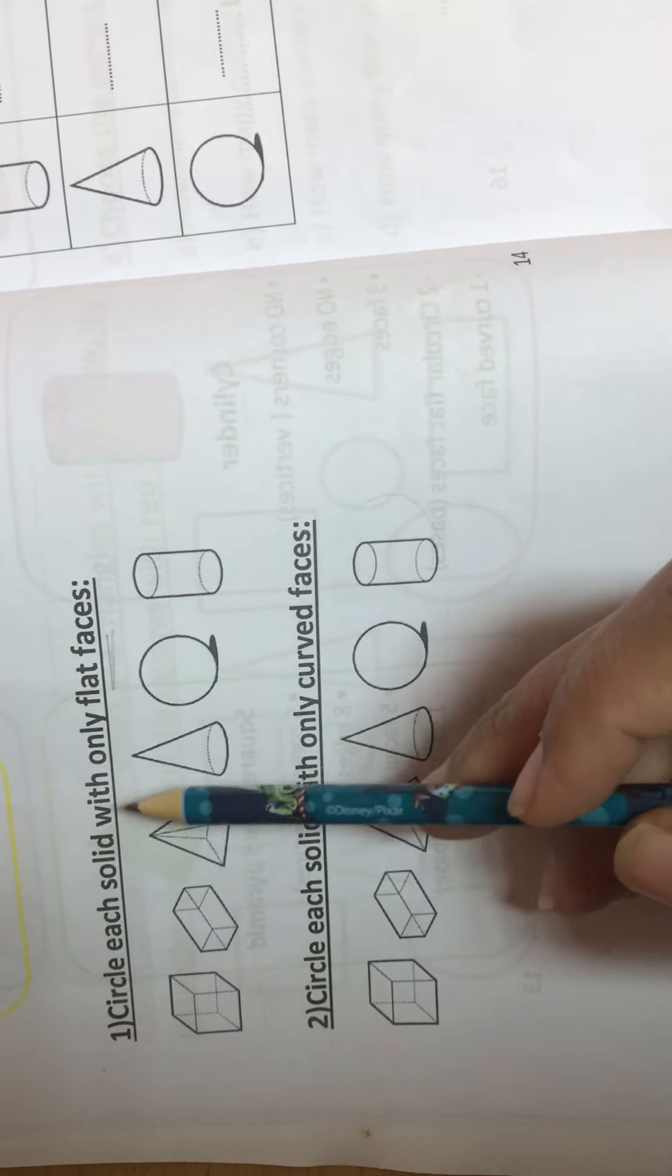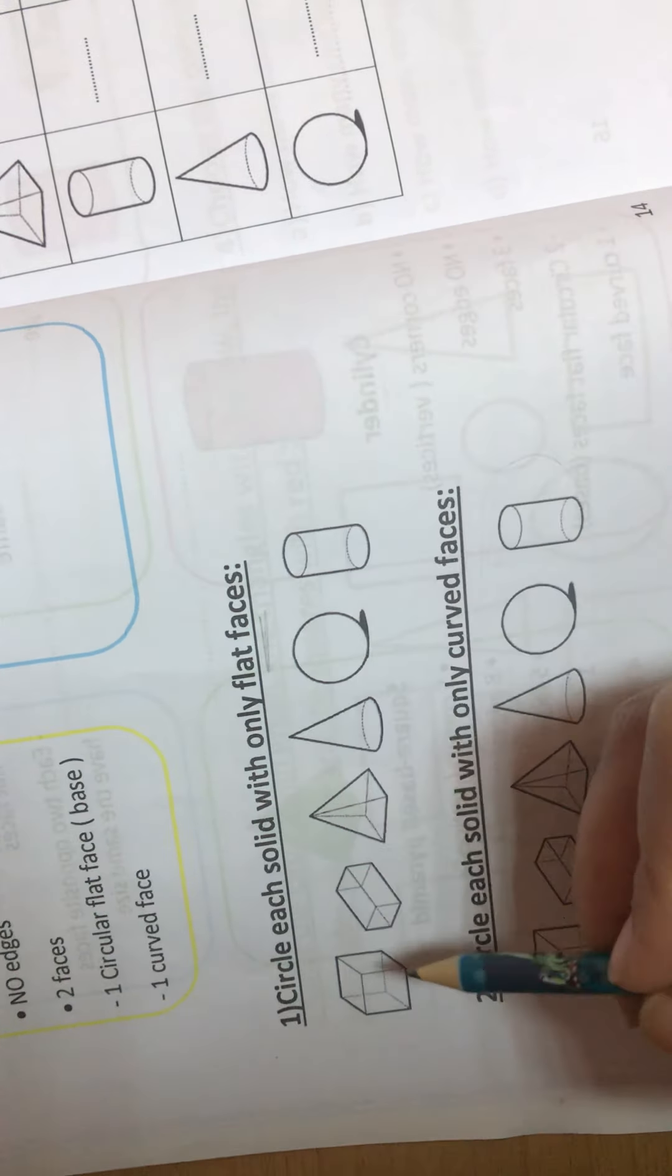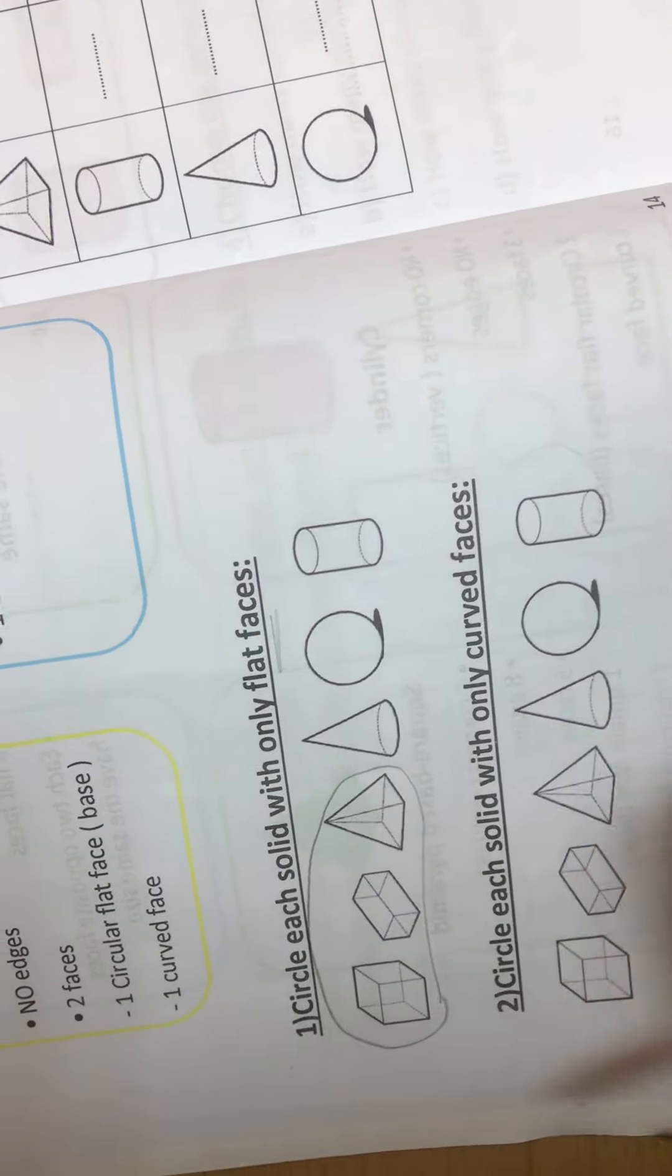Let's see the first question. Circle each solid with only flat faces. So, here's the first three shapes. Put a circle.